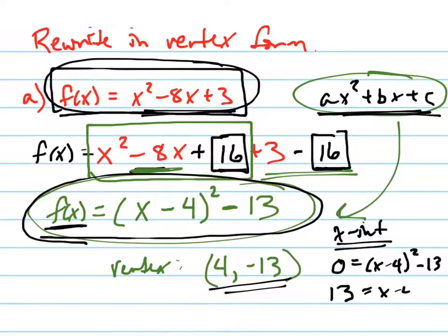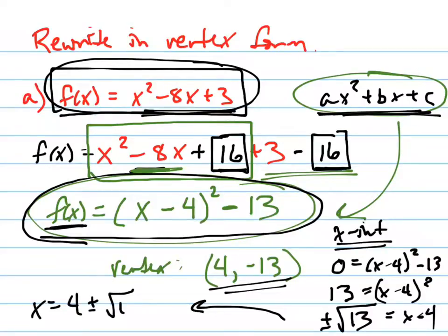I'm going to add 13 to both sides. Now I'm going to take the square root of both sides. And don't forget, when you take the square root, you really have to take the plus or minus square root. See that? And so now what do I have to do to get x by itself? Add 4 to both sides. I'll put it over here. x equals 4 plus or minus the square root of 13.